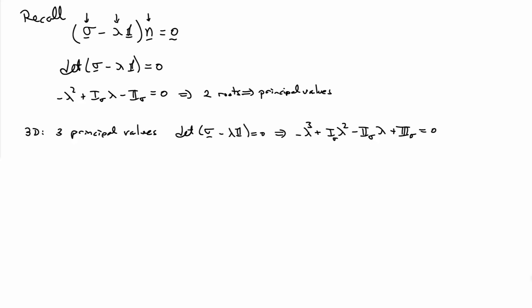In 3D, you end up with three principal values. Taking the determinant will give you a cubic polynomial minus lambda cubed plus the trace times lambda squared minus the second invariant of the stress, the second invariant for the 3D case, that is, times lambda, plus the third invariant of the stress, which in the 3D case is the determinant, equals zero. So one can also solve this cubic polynomial for lambda. And that will give us three principal values in 3D.